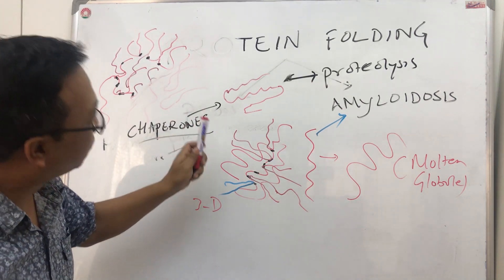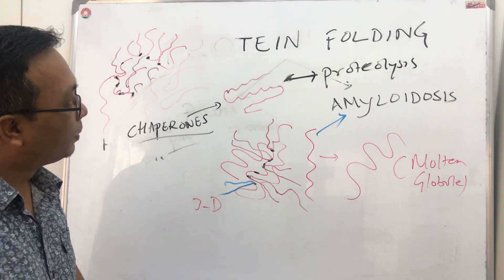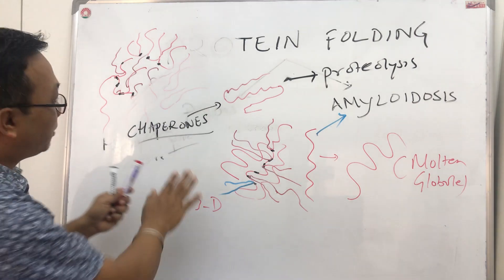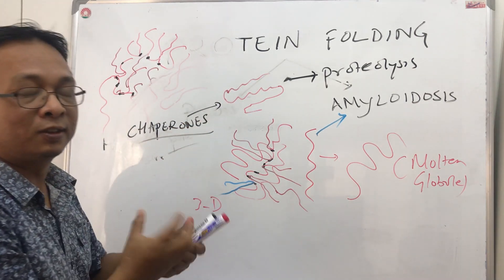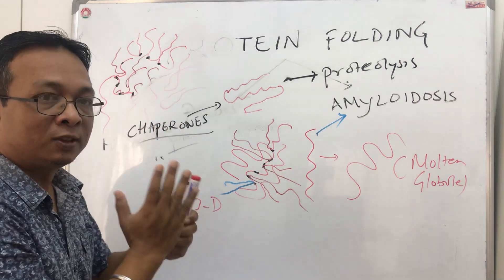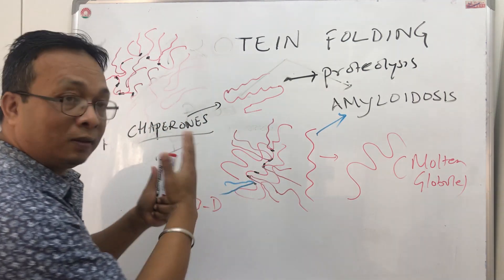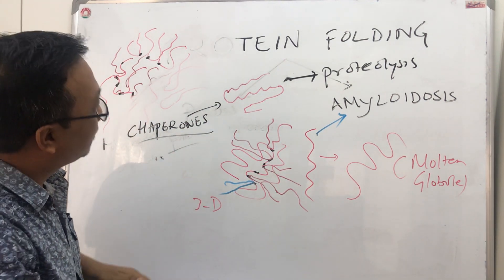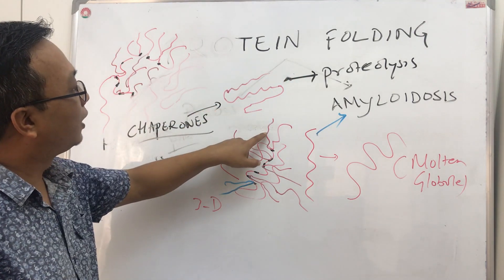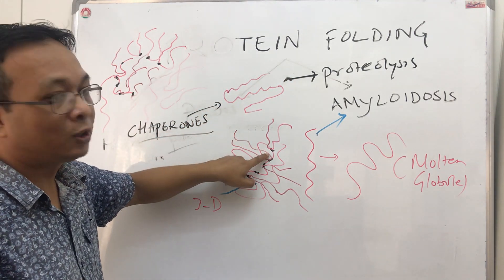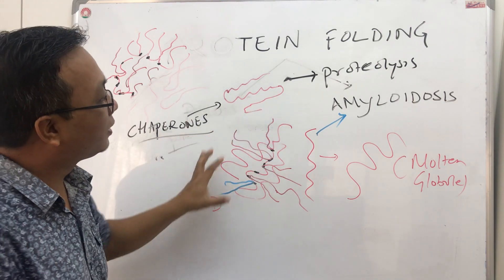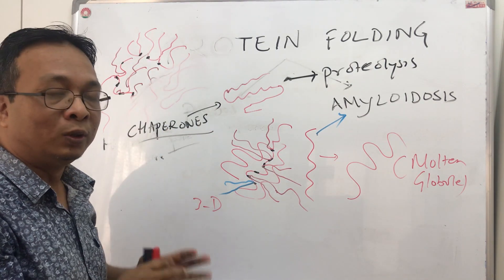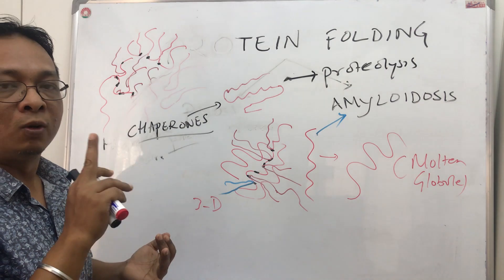When a protein is misfolded, it either goes for proteolysis or it can be corrected by chaperones, which try to restore a normal stable conformation. If chaperones cannot correct the folding, the protein is completely destroyed via proteolysis. But if neither proteolysis nor chaperone correction occurs, the misfolded protein exposes its hydrophobic side, causing aggregation and amyloidosis.